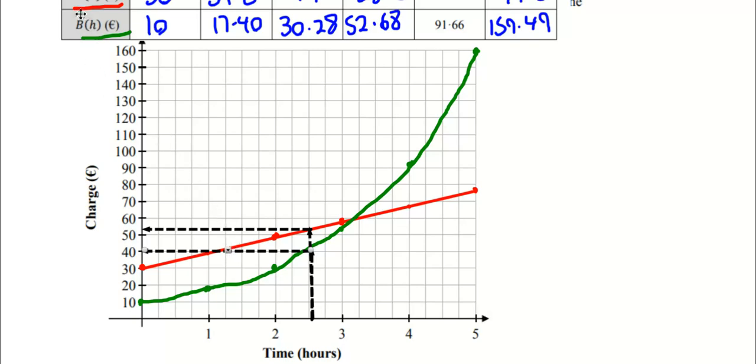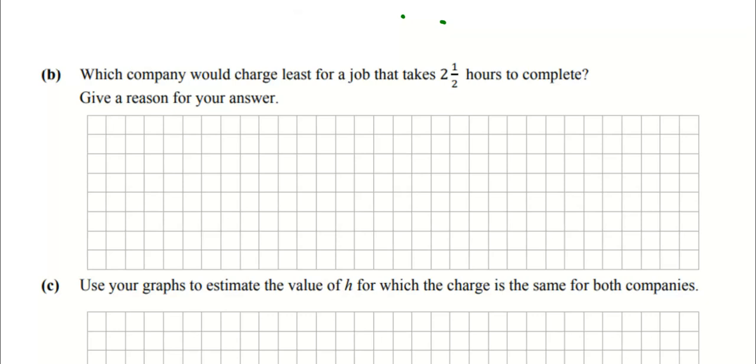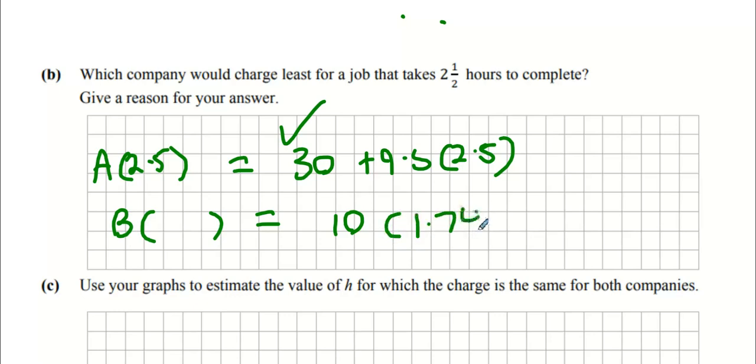You could stick 2.5 into the formula. It doesn't say you're not allowed to use the graph, so why not? We'll do it Luke's way as well. What's AH? 30 plus 9.5, you're just going to sub in 2.5. And BH? Putting in the powers here.